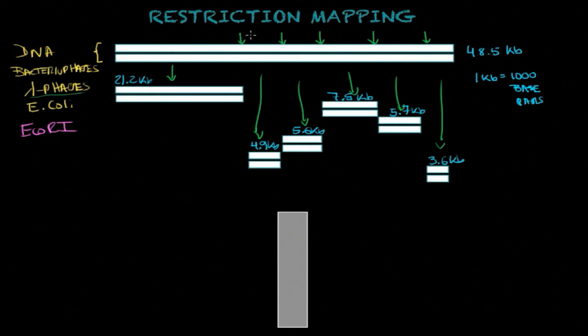One is 5.7 kilobases, and the smallest one is about 3.6 kilobases. So this enzyme is able to find 5 cleavage sites and then create 6 different fragments. And what you will do now is you're going to use a technique called gel electrophoresis to create this restriction map.